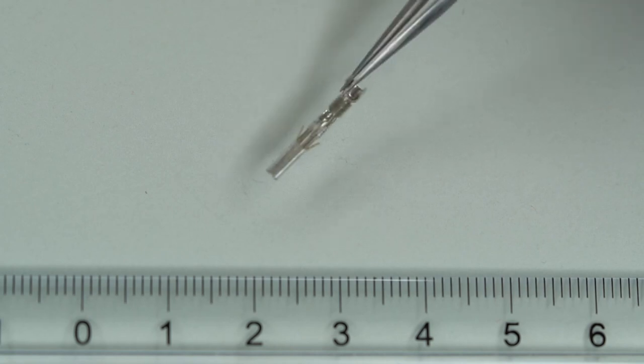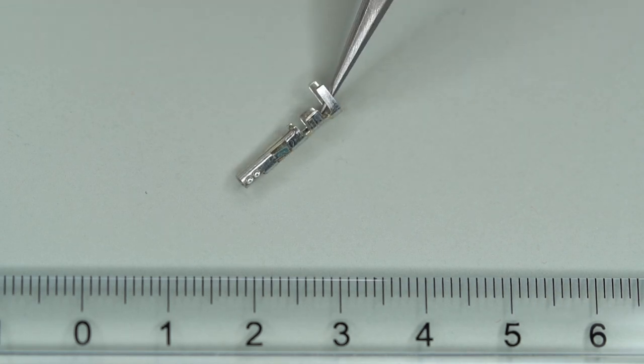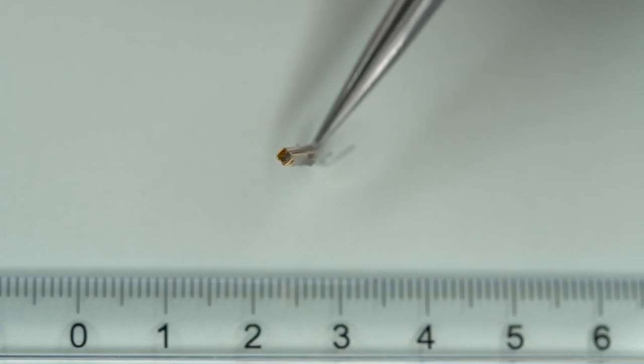Here's a close-up of the basic crimp socket. There are also gold-plated versions, probably better for automotive use, for less oxidisation or corrosion. This one is gold-plated on the contact portions inside.